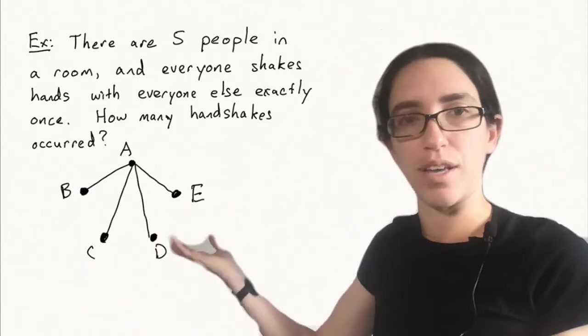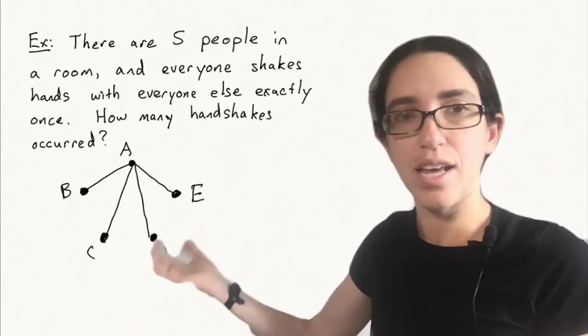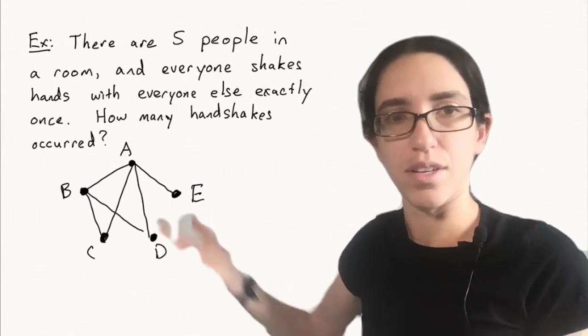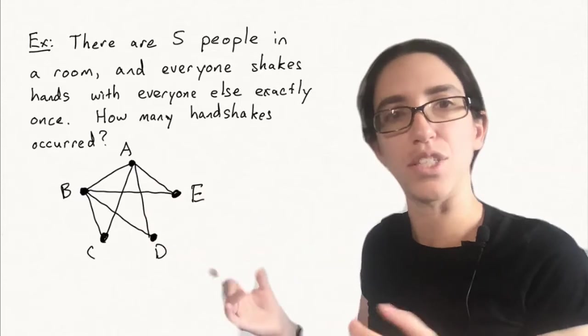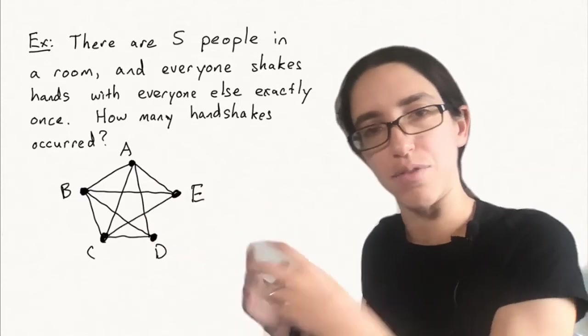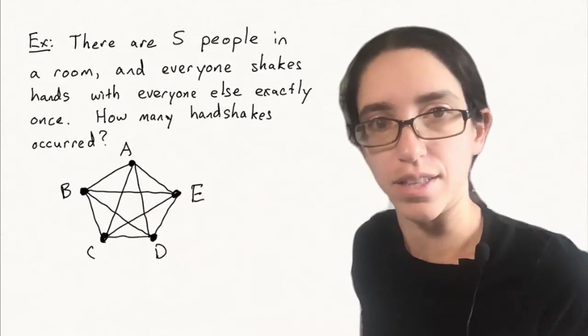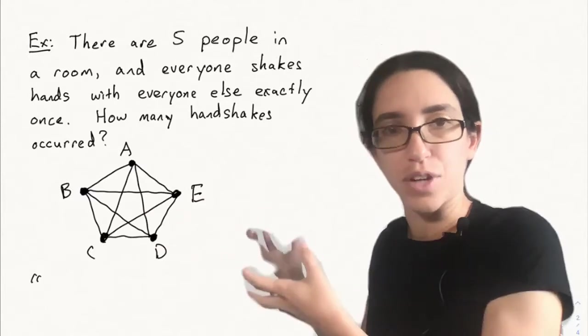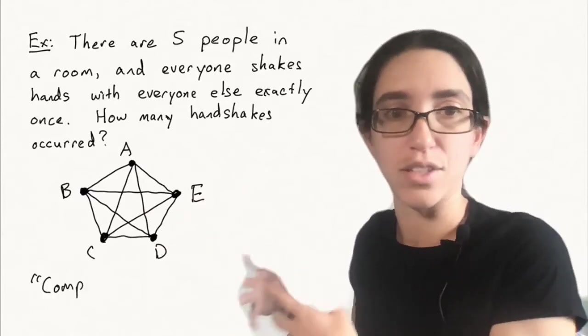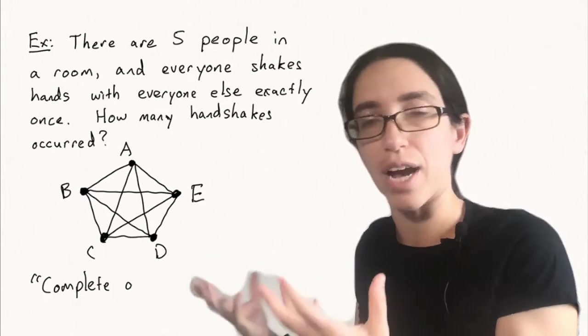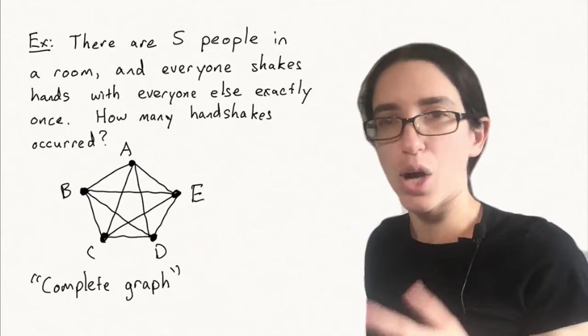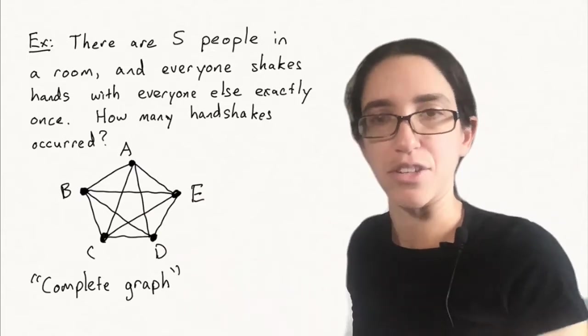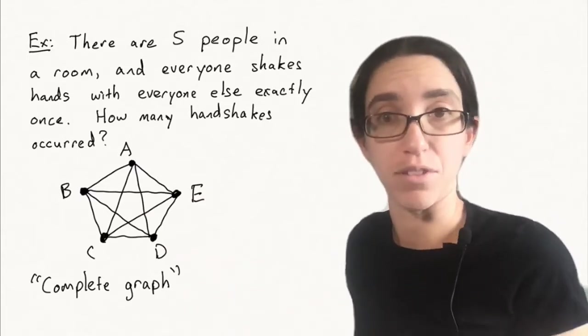And so you can see A shook hands with B, C, D, and E. And then B has to shake hands with C, D, and E. Everybody shakes hands with everybody else exactly once. So we're just going to draw an edge between every single pair of vertices in this graph. This graph that has all the edges drawn is called a complete graph. And there's a complete graph for any number of vertices. So the handshake problem can be rephrased as saying how many edges are in a complete graph, in this case in five vertices.